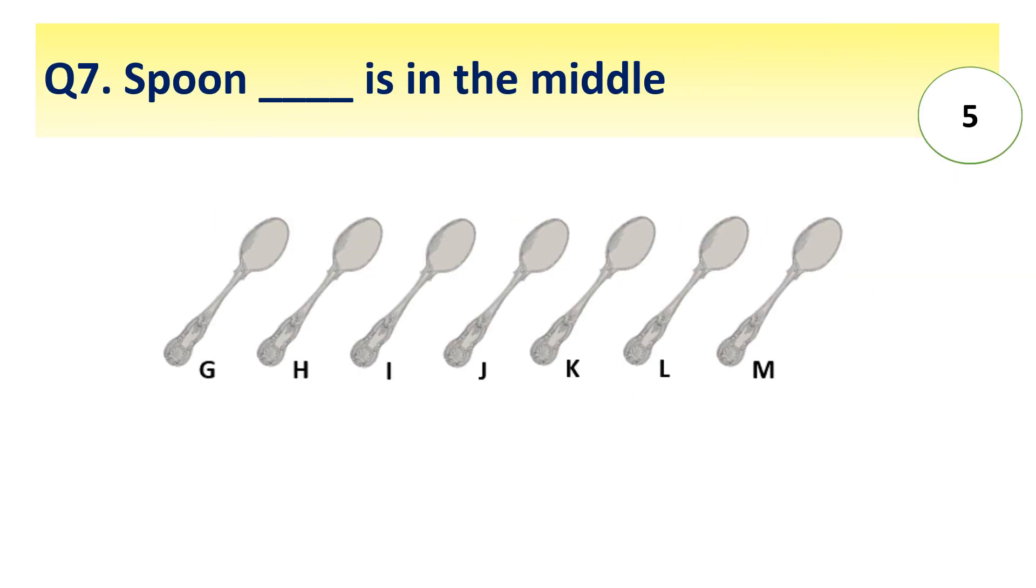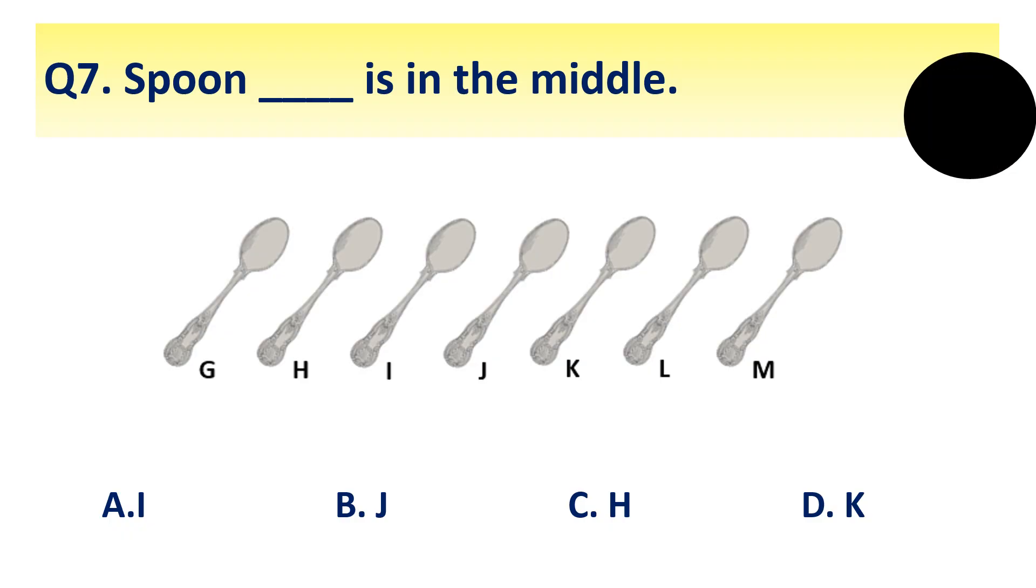Number 3: Spoon dash is in the middle. G, H, I, J, K, L, M. Answer: J spoon is in the middle. We can see there are total 7 spoons and J is in the middle.